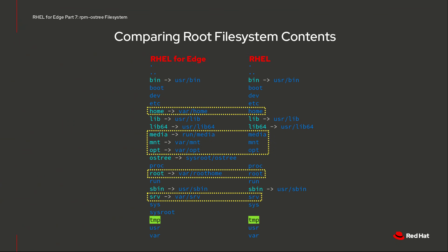The main difference is that HOME, MNT, OPT, ROOT, and SRV on the RPMOS tree-based system are all symbolic links into directories under slash VAR. On an RPMOS tree-based system, the VAR directory is where persistent data should be placed, which is why several of these directories are now symbolic links into directories under VAR. For example, the symbolic link for slash HOME will cause the HOME directories to be placed in slash VAR slash HOME. There are also a couple of directories unique to an RPMOS tree-based system: the os-tree and sysroot directories, which I'll cover in more detail later in the video.